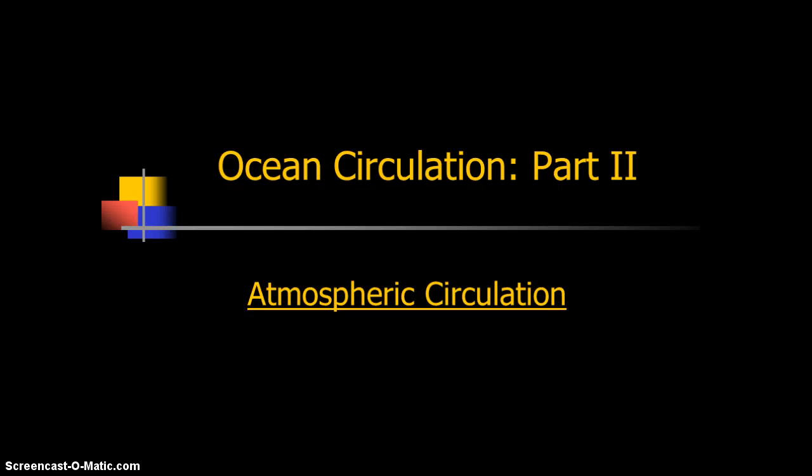Hey class, this is Professor Steve and this is going to be our last stop in this unit for ocean circulation — only the second part — and that is atmospheric circulation. We've been building up learning about pressure centers, the effect that Coriolis has on objects moving on a rotating plane, how that affects different pressure systems, and now we need to learn how that affects atmospheric circulation. All of this sets up the next unit where we'll see how this interacts with the ocean to generate much of the surface ocean circulation.